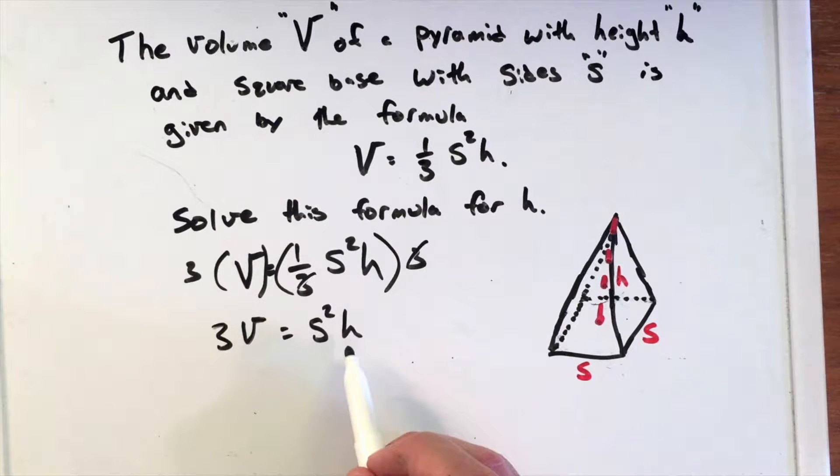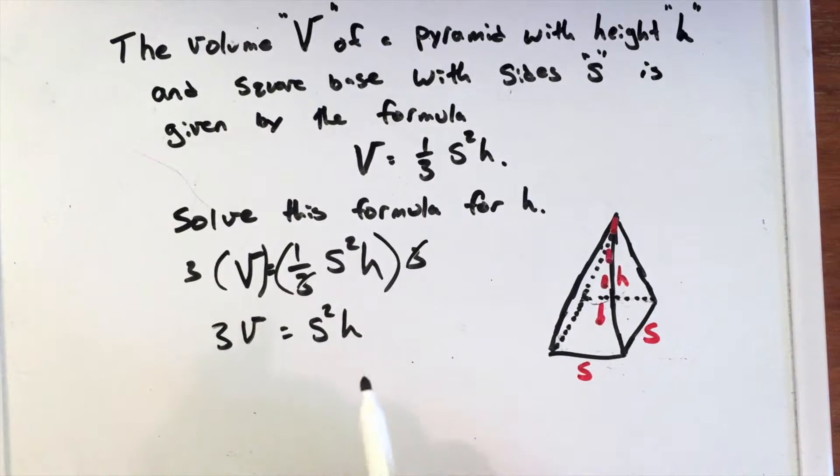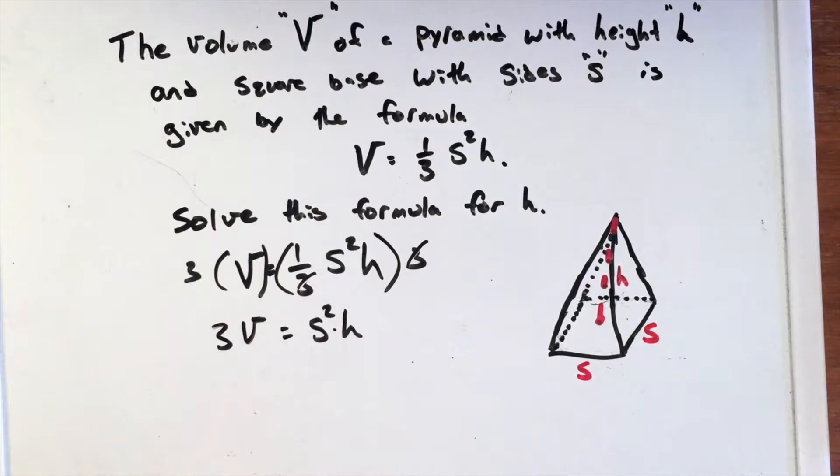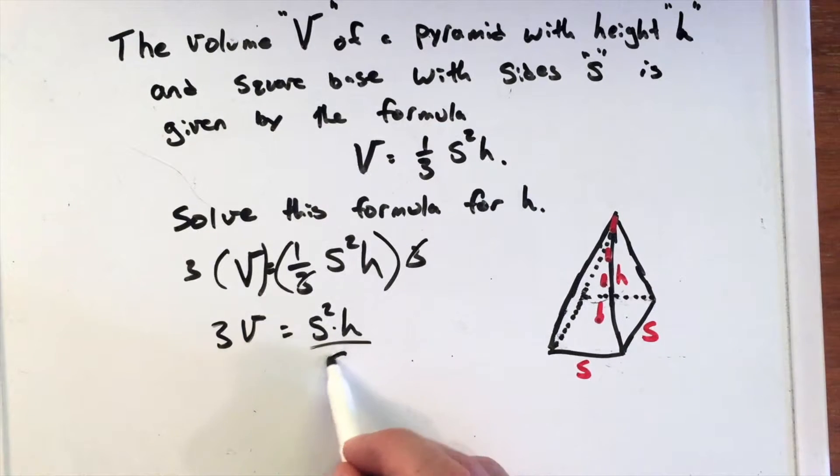Now, sometimes people want to jump to a square root here because it's squared, but that's not the right step. We have a multiplication going on between s² and h, so we just want to get h by itself. We can just divide both sides by s², and now we're left with 3V over s² equals h.